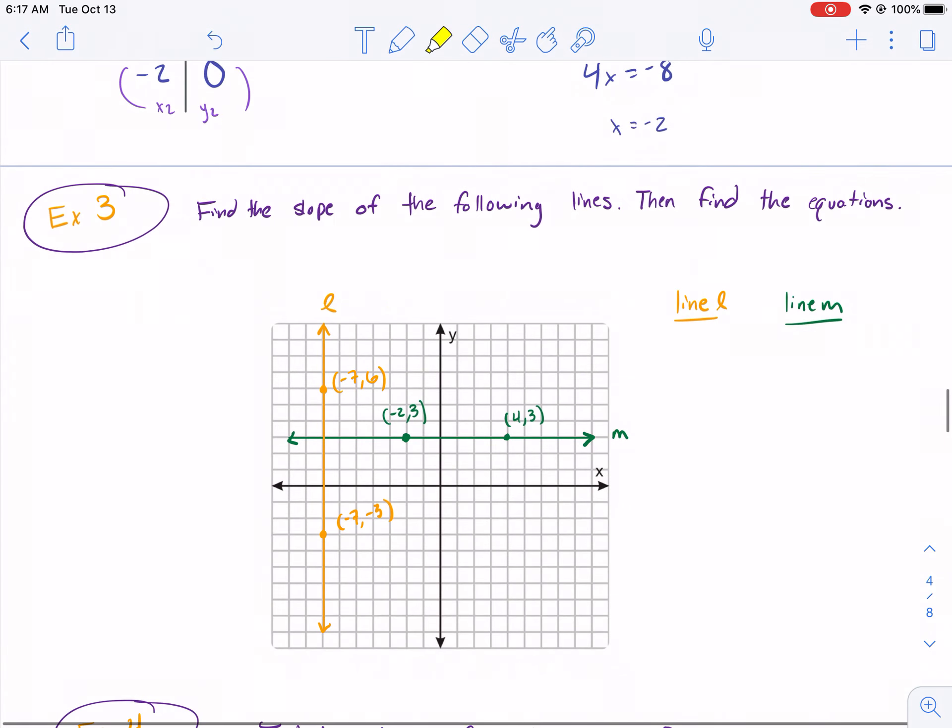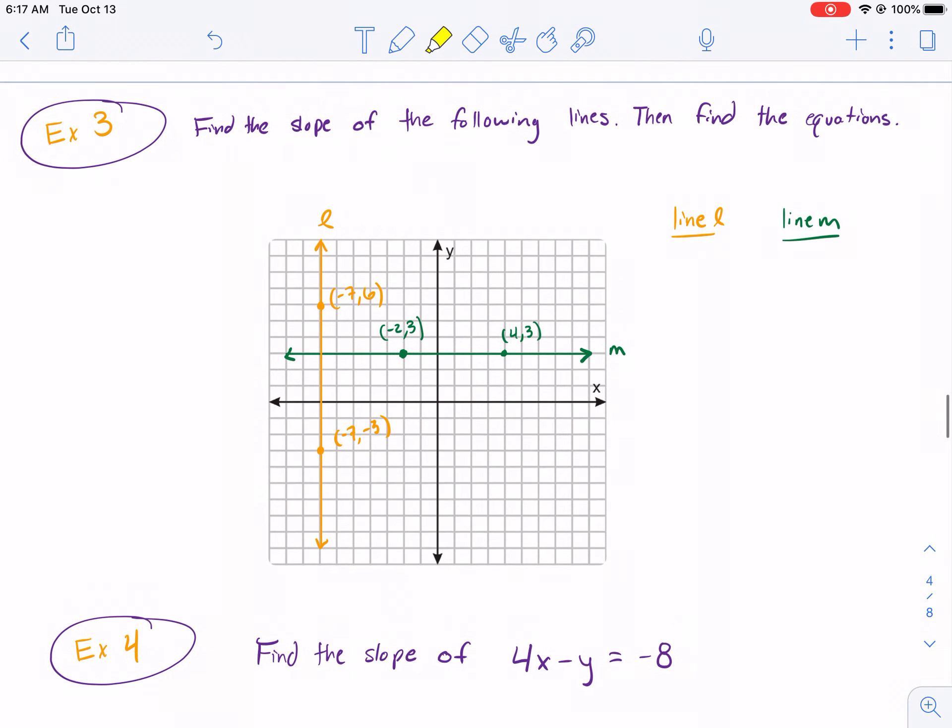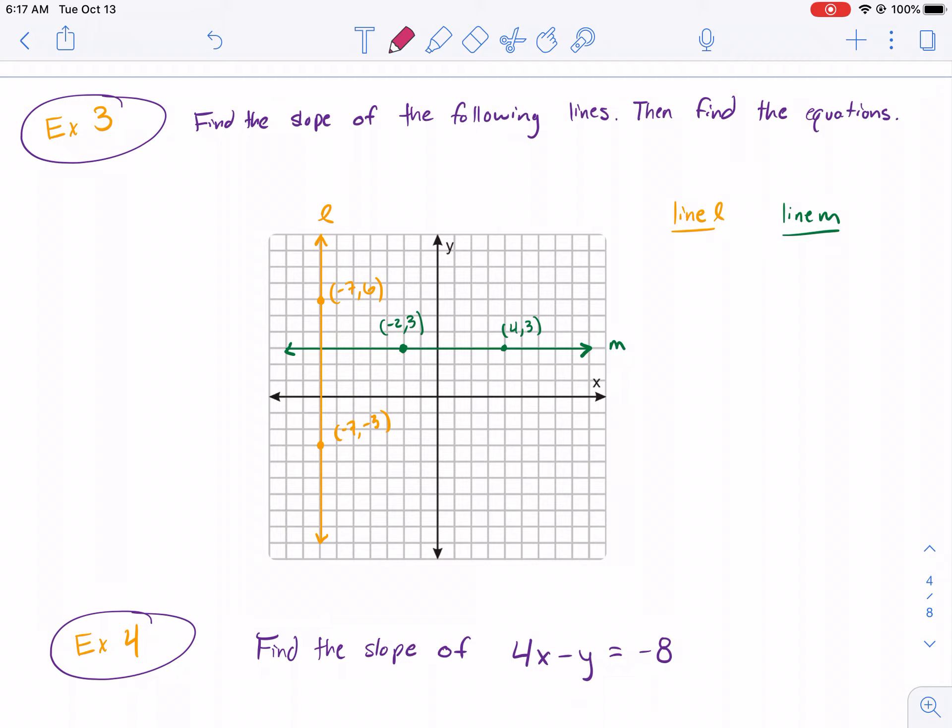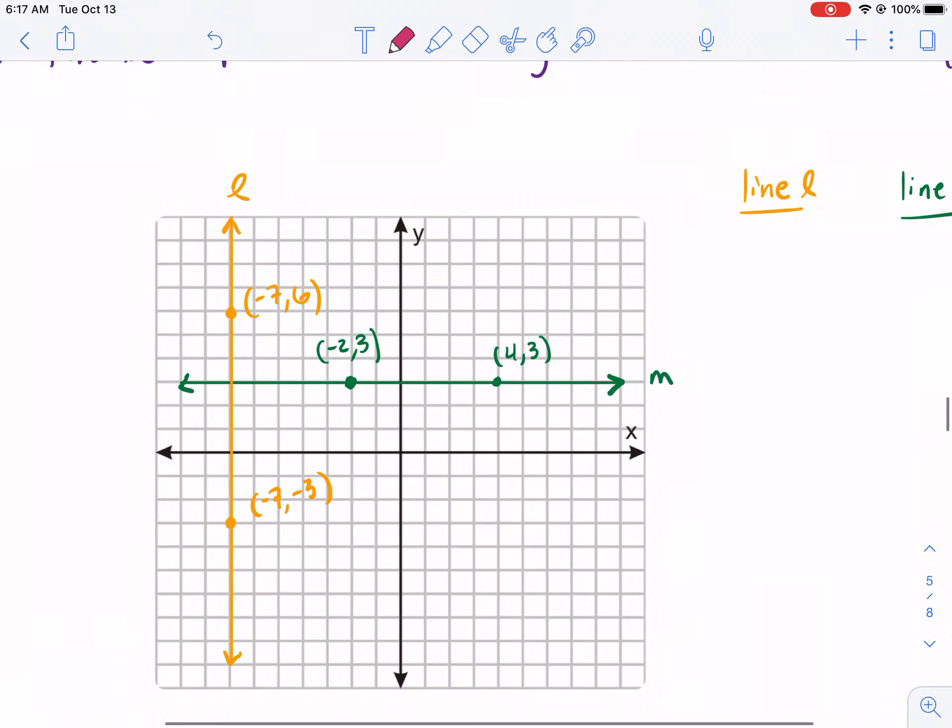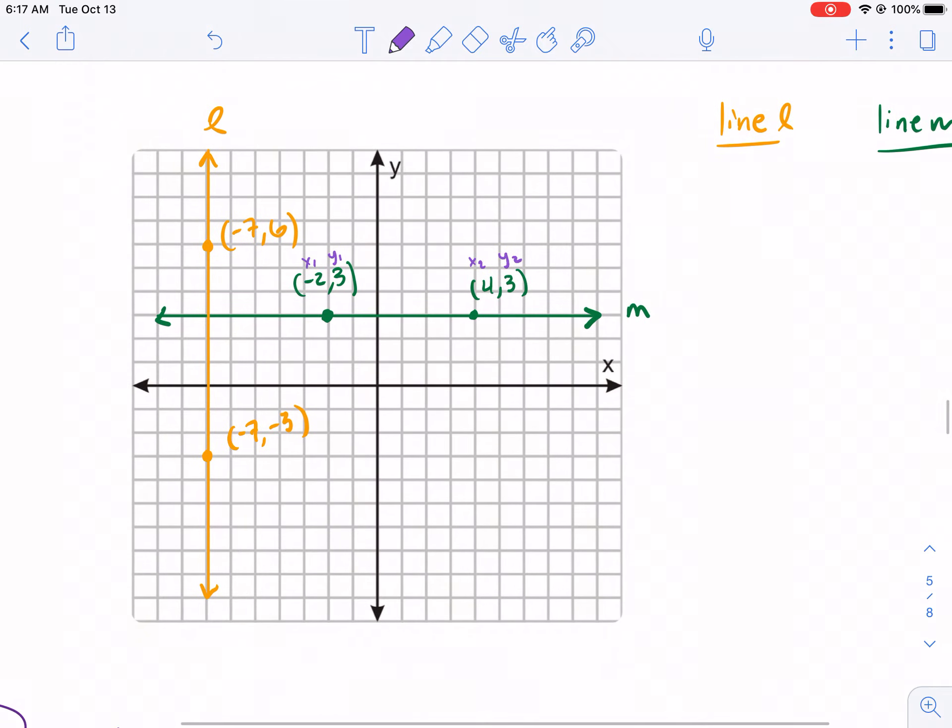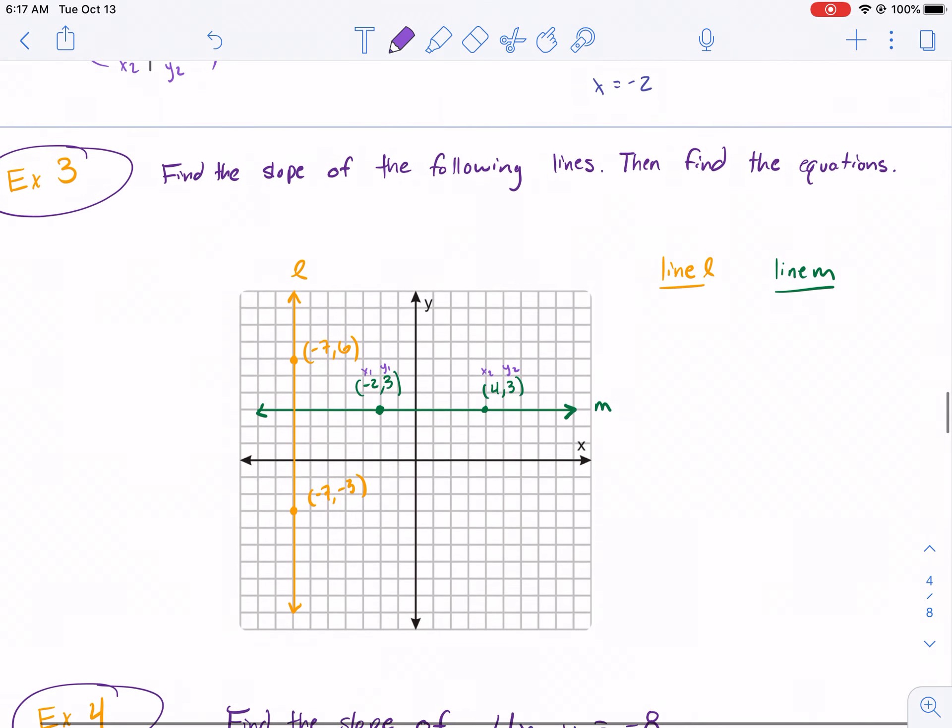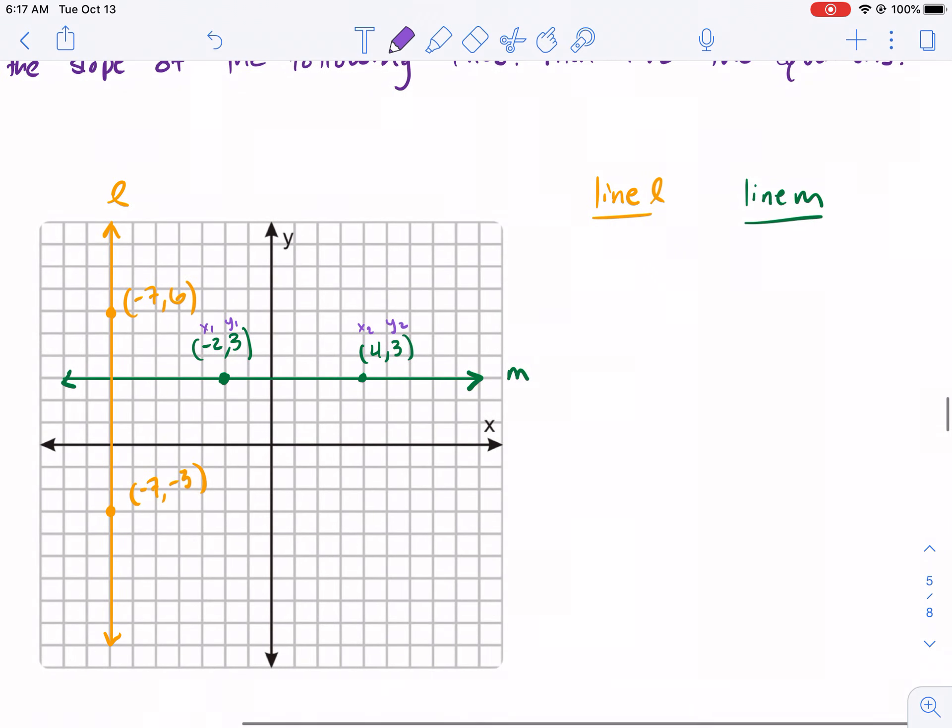Find the slope of the following lines. Then find the equations. So, let's start with our first objective and let's go with the green line. So, the green line, we're going to find our slope first. Label first. X1, Y1, X2, Y2. Now, what we're going to do here is we're just going to do our slope just like we did before. So, our slope for line M is going to be 3 minus 3 in the top over 4 minus negative 2 in the bottom. I get 0. And I get 0 for my slope.